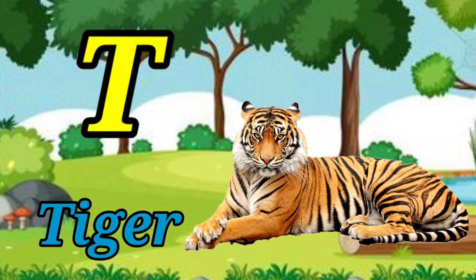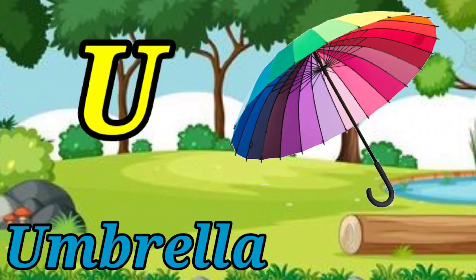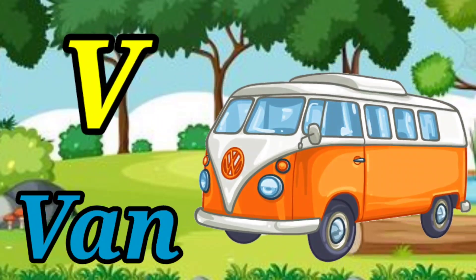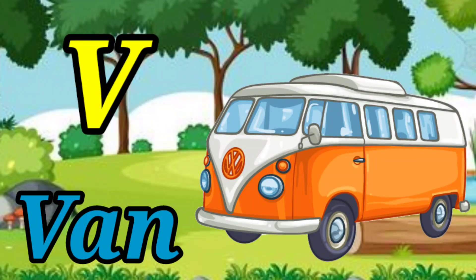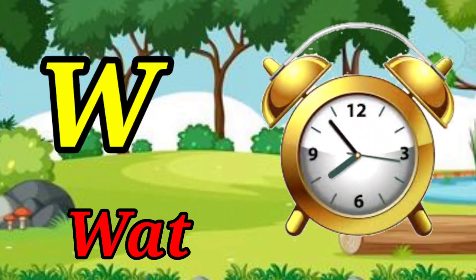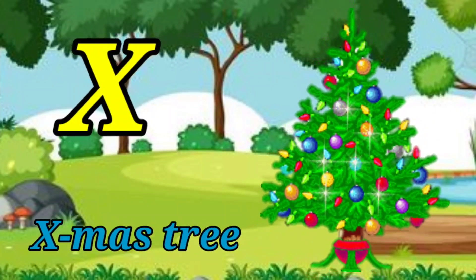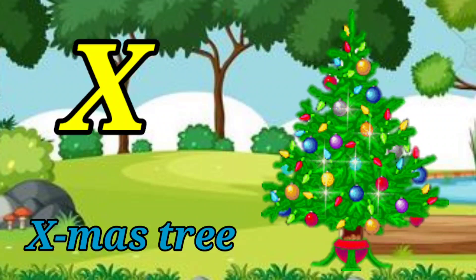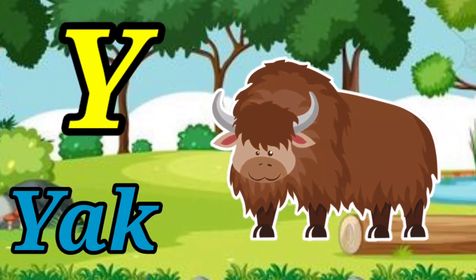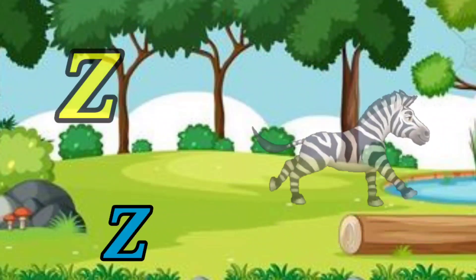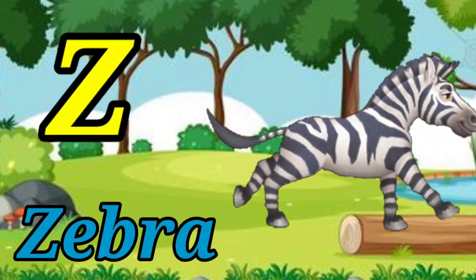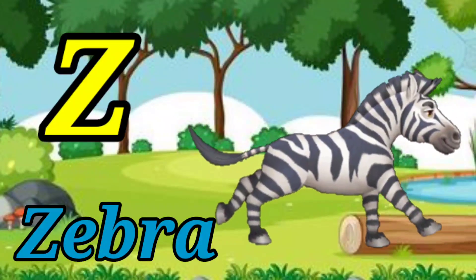S for sun, T for tiger, U for umbrella, V for van, W for watch, X for x mystery, Y for yak, Z for zebra.